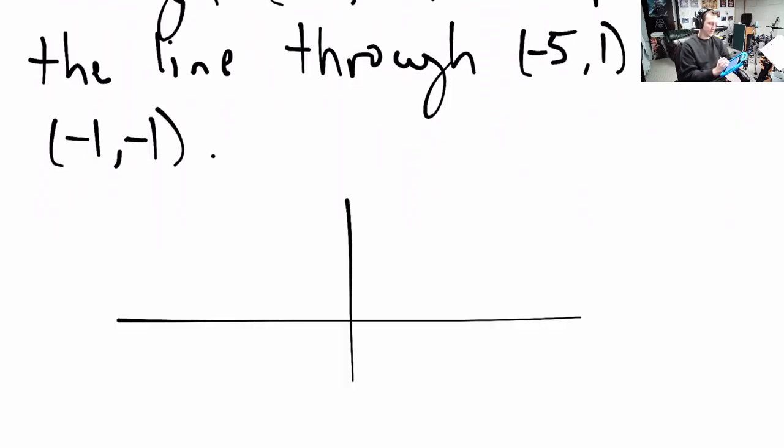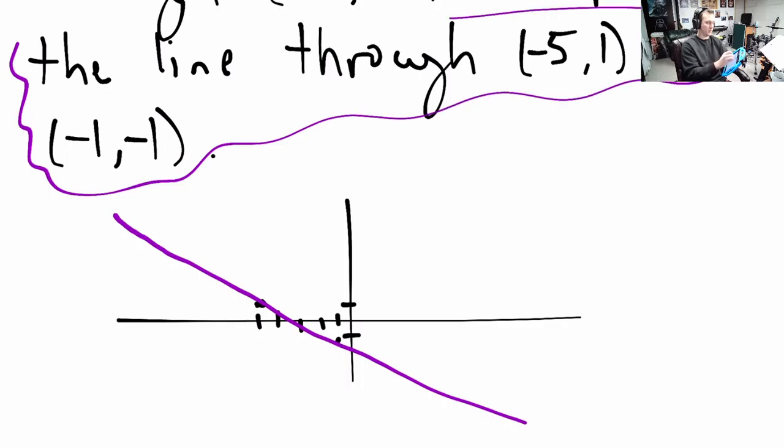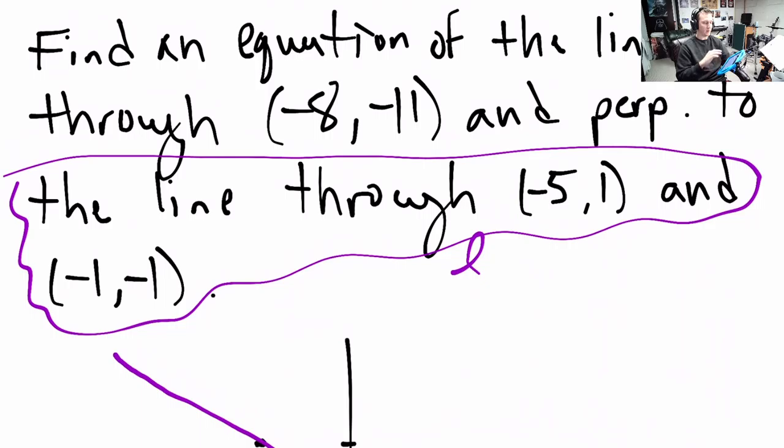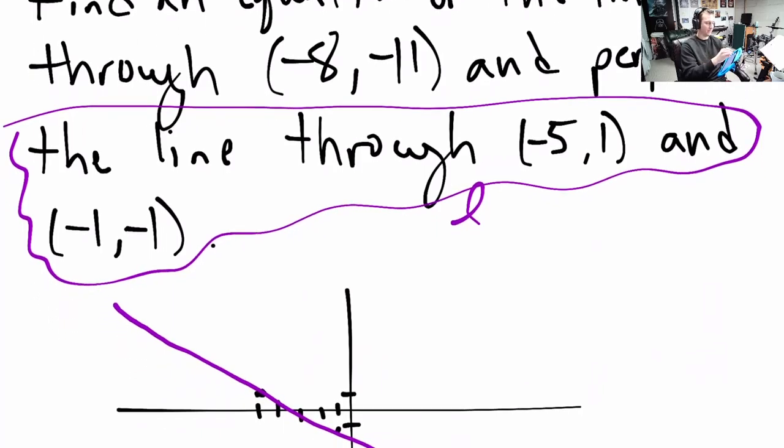So, in pictures, we've got this point, negative 1, negative 1. We've got this point, negative 5, 1. We have a line that goes through these two. So it should be obvious from this picture and those points that this line, I'll call this one, the purple one, call that one L, it should be obvious that this line has a negative slope. And what we want to do is we want to find the equation of the line through a different point, negative 8, negative 11, that is also perpendicular to this purple line.